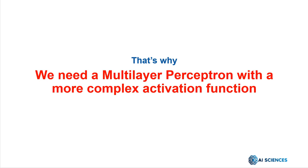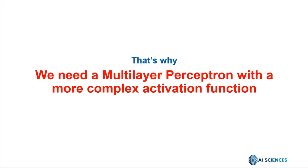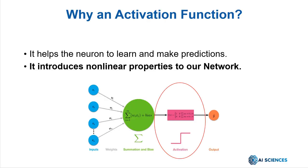So in this video, I'm going to present some interesting activation functions and discuss how the multi-layer perceptron works. First, what is the goal of the activation function? As we've already seen, the activation function is one of the most important components in the neural network. In particular, it is essential for at least the following reasons: it helps the neuron to learn and make predictions, and it introduces non-linear properties to our network. Let's explore several non-linear activation functions that are generally used for neural network projects.